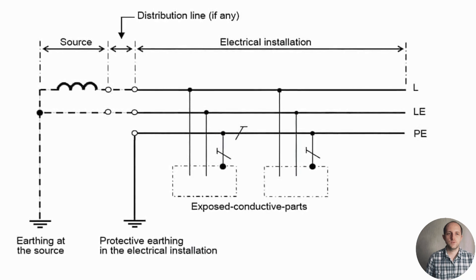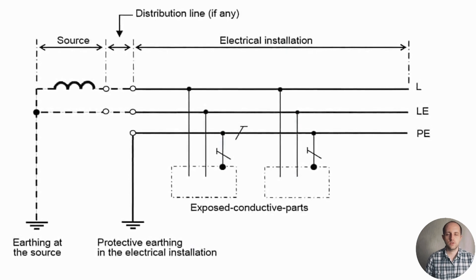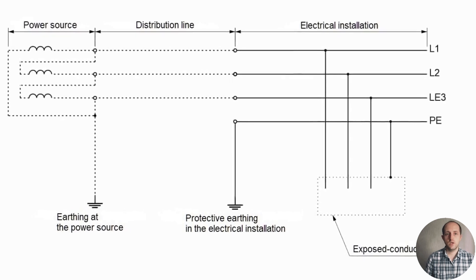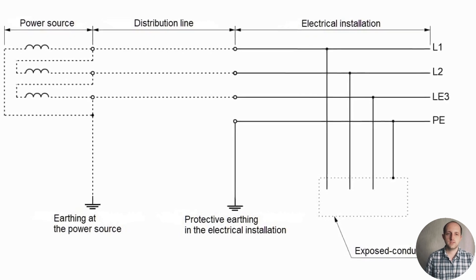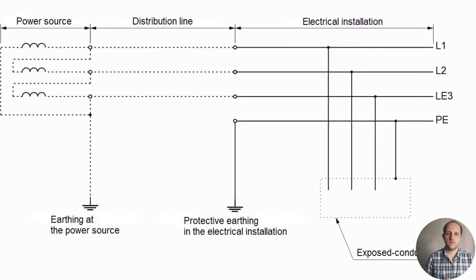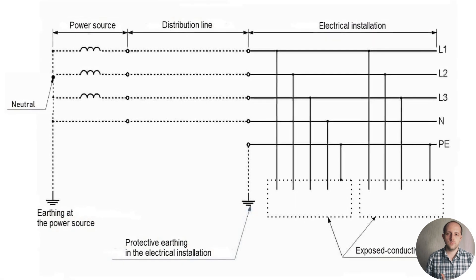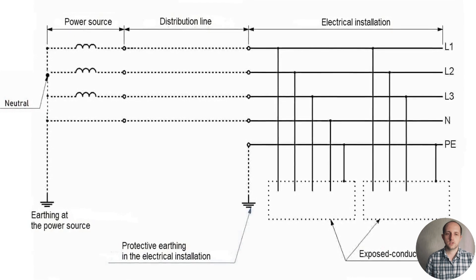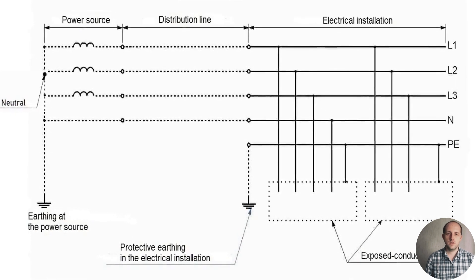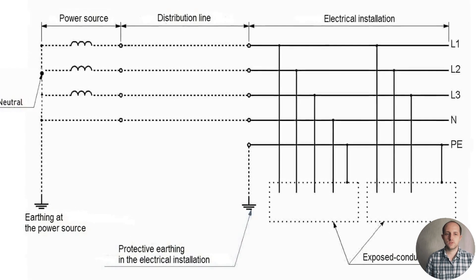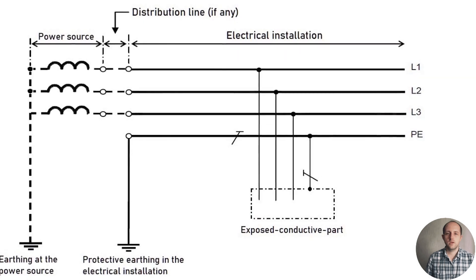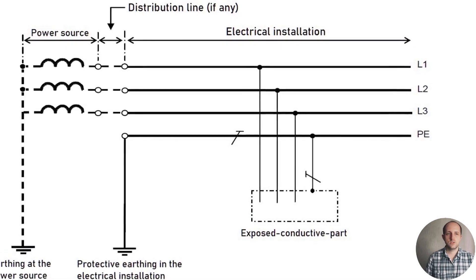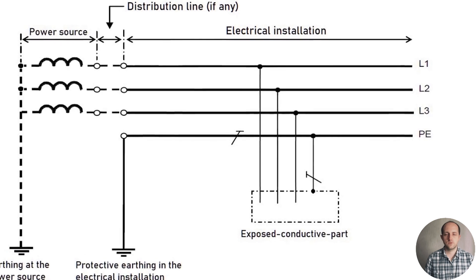Examples of TT earthing system diagrams: Example 1 — TT system, single-phase 2-wire, with earth at phase conductor throughout the distribution system. Example 2 — TT system, 3-phase 3-wire, with earth at protective conductor and no neutral conductor throughout the system. Example 3 — TT system, 3-phase 4-wire, with earthed protective conductor and neutral conductor throughout the distribution system. Example 4 — TT system, 3-phase 3-wire, without the neutral conductor throughout the distribution system.